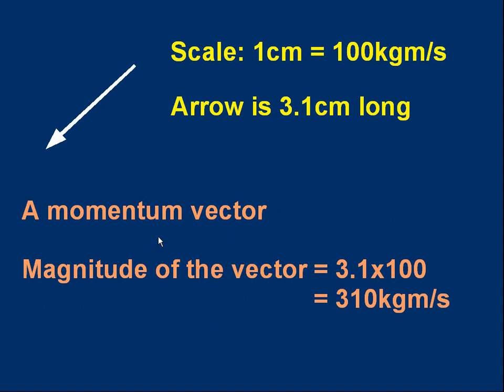Well, it's a momentum vector, you can tell by the units. And 100 kilogram meters per second is one centimeter. The arrow is 3.1 centimeters long, you might have measured it with a ruler. So I hope you can see the magnitude of the vector is 3.1 times 100, which is 310 kilogram meters per second.